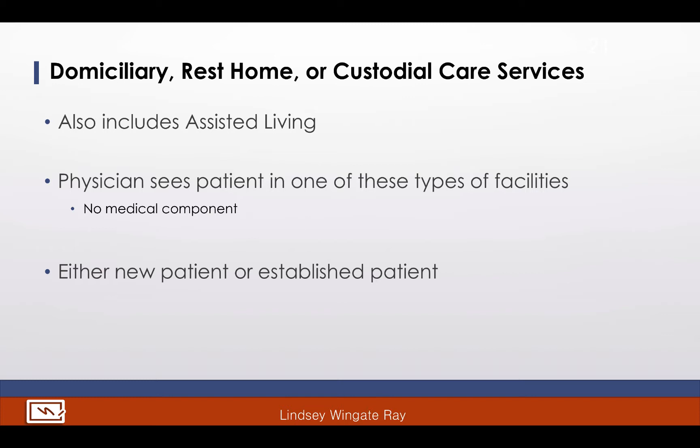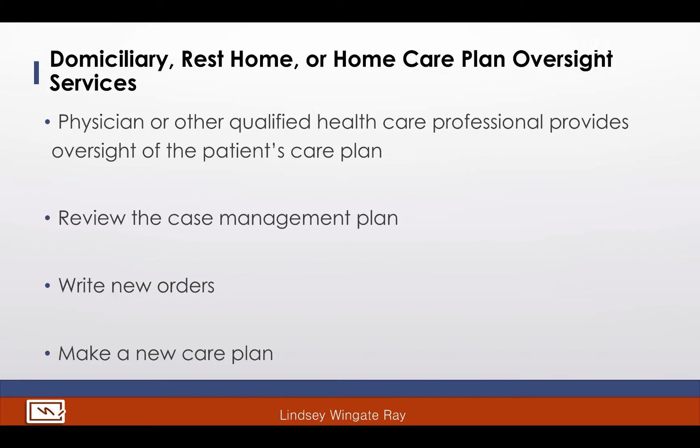The next category in evaluation and management codes are for services provided to patients in rest homes, boarding homes, custodial care services, or assisted living. You may want to make an entry in the alphabetic index or in your table of contents at the beginning of the section — write in assisted living, custodial care services, rest homes, and boarding homes. Care plan oversight services are used when the physician provides the oversight of the patient's care plan for services provided to patients in domiciliary, rest homes, boarding homes, custodial care services, or assisted living.